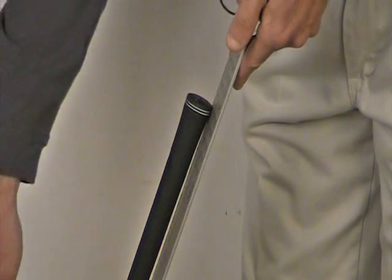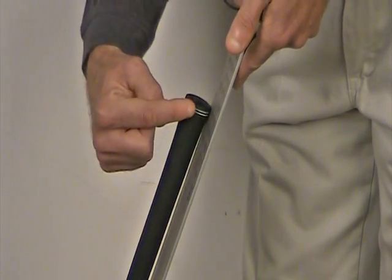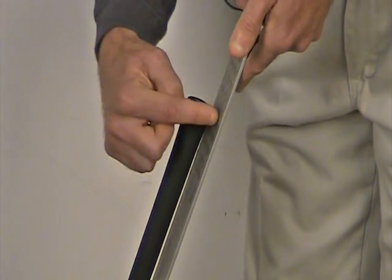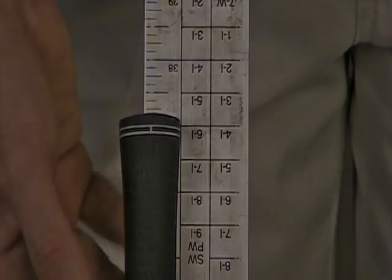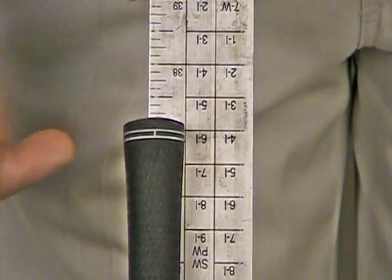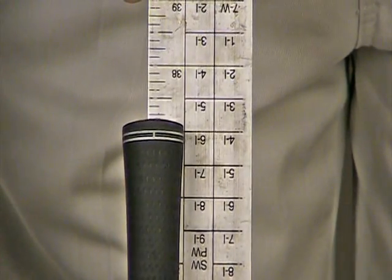As you can see, you measure up the back length to the edge of the grip cap, and from there you could take your measurement from the ruler. And as you can see from here, the club length is measuring 37 inches.